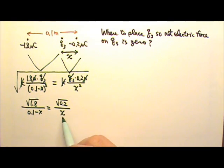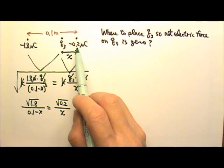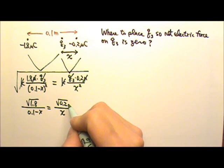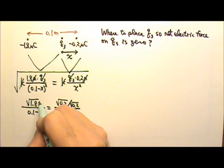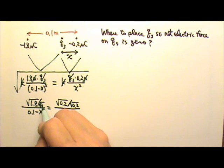We certainly can just cross multiply and then solve for x. Or we can actually simplify this a little bit because the 1.8 happens to be 9 times the 0.2 and then we can take square root of 9 which is 3 easily. So I'm just going to divide by square root of 0.2 so I get square root of 9 here and the square root of 1 over there. I can get easier numbers to work with.